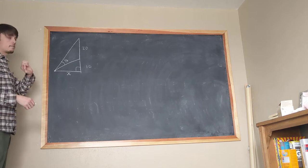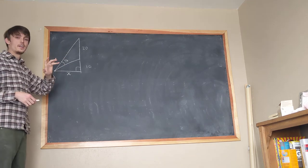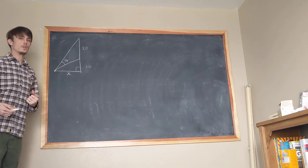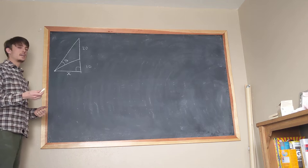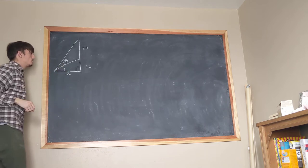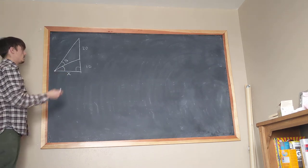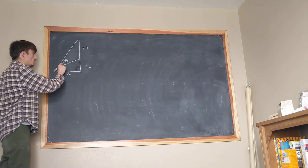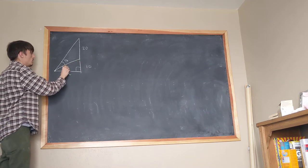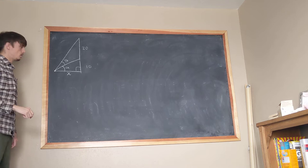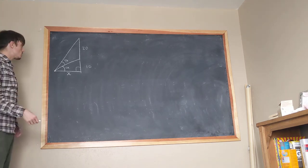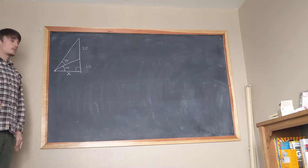As we often do in optimization problems, we need to add our own labels. The picture alone isn't enough information to solve this. I need to add the lower angle for the lower triangle, which we'll label alpha. Now I can start doing right triangle trigonometry with theta and alpha.